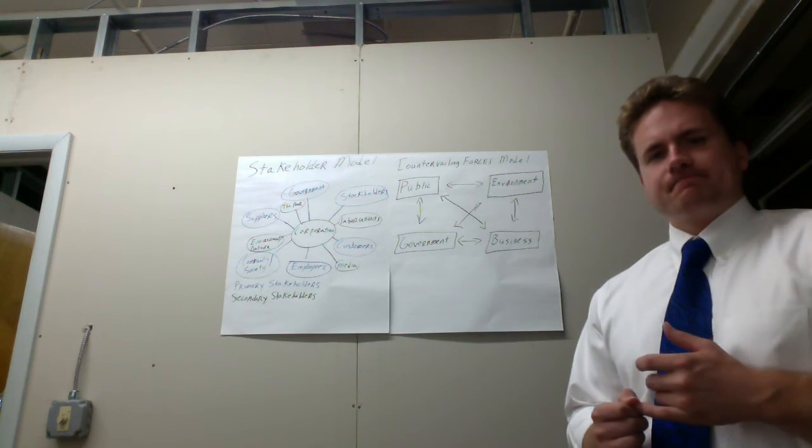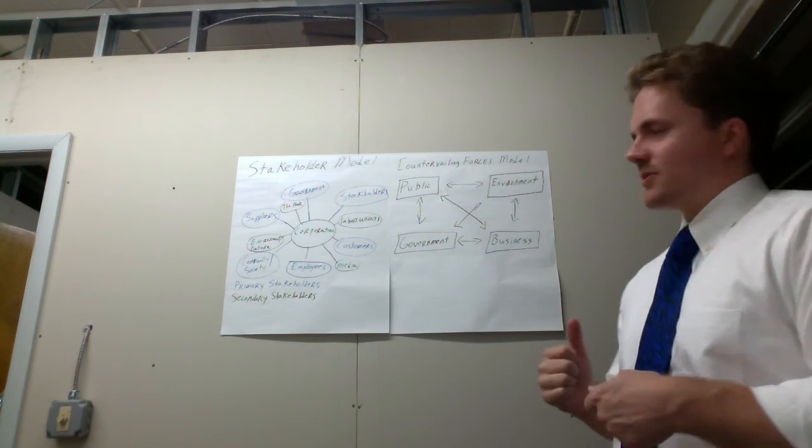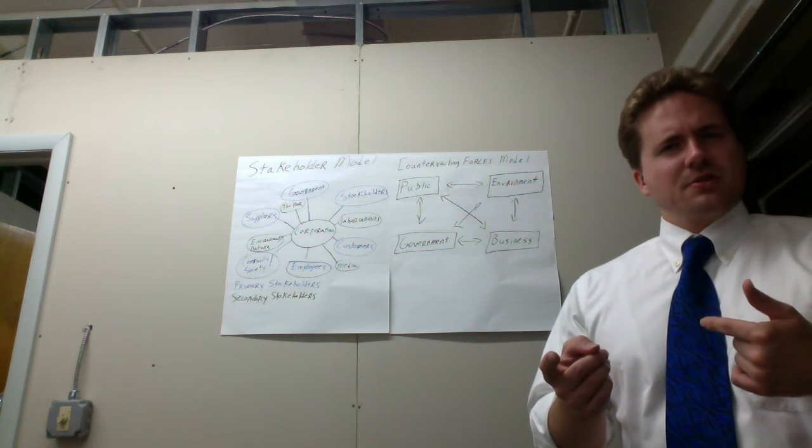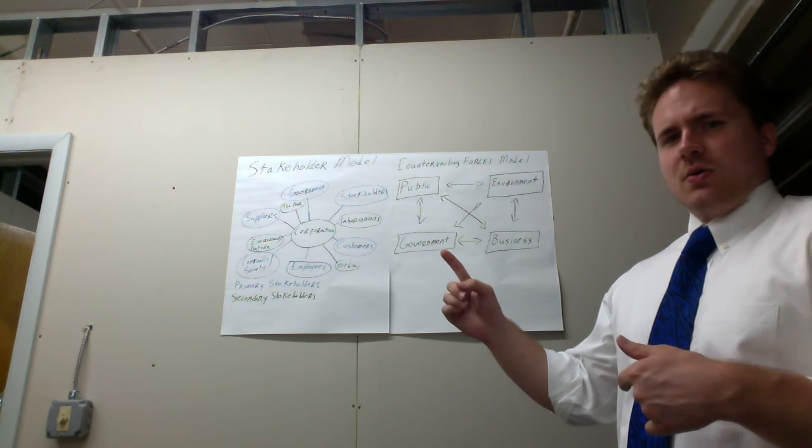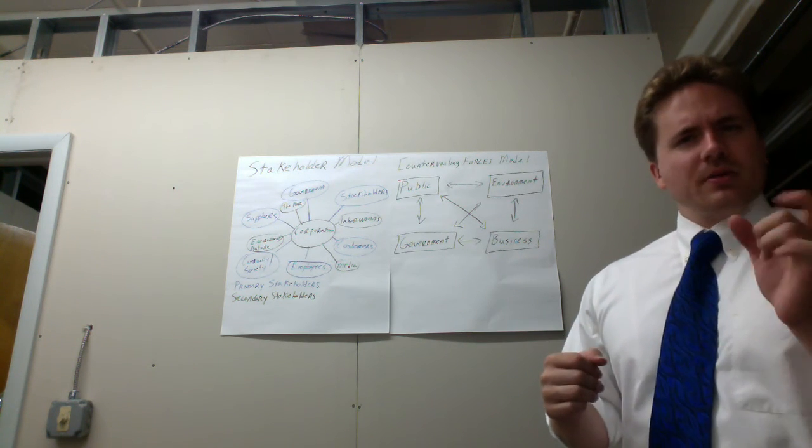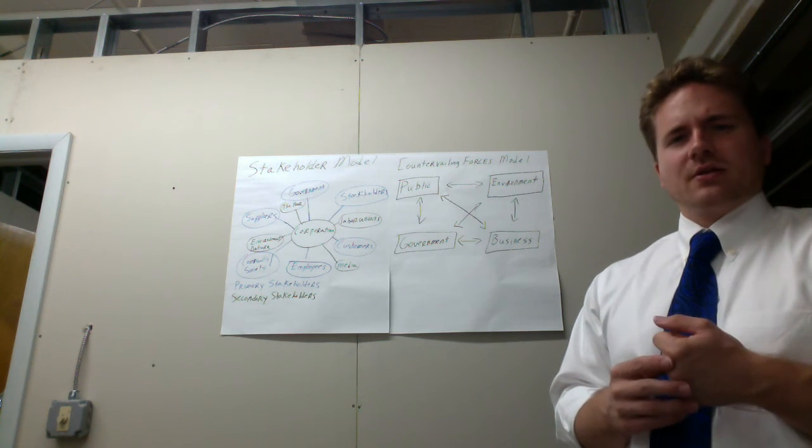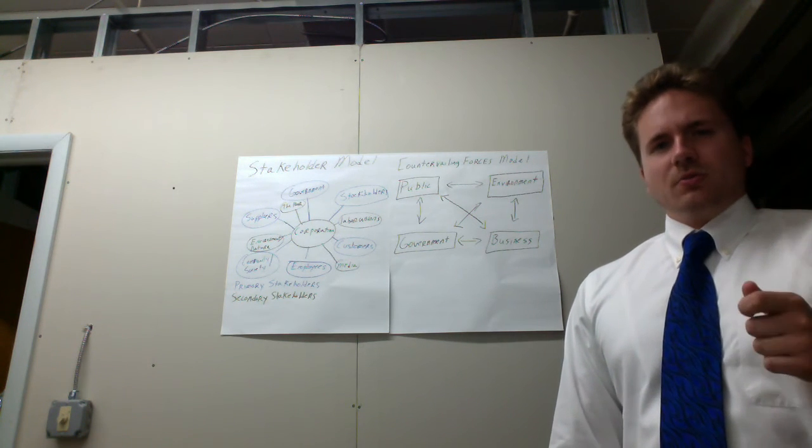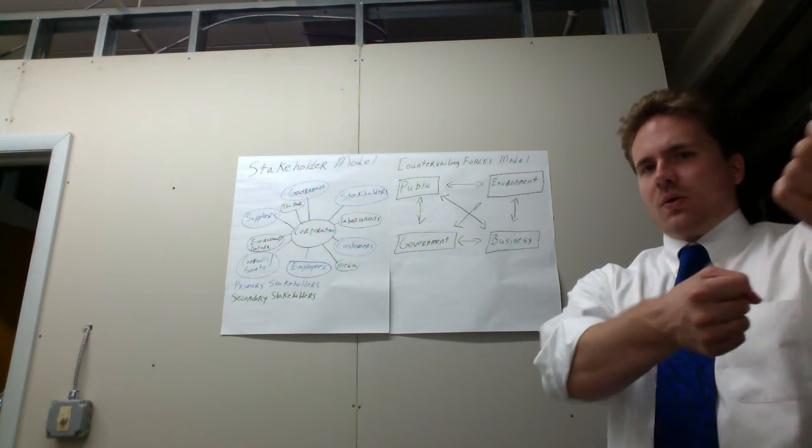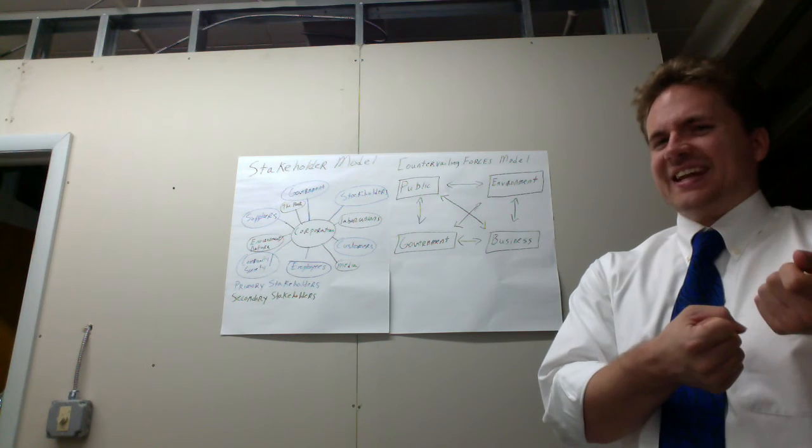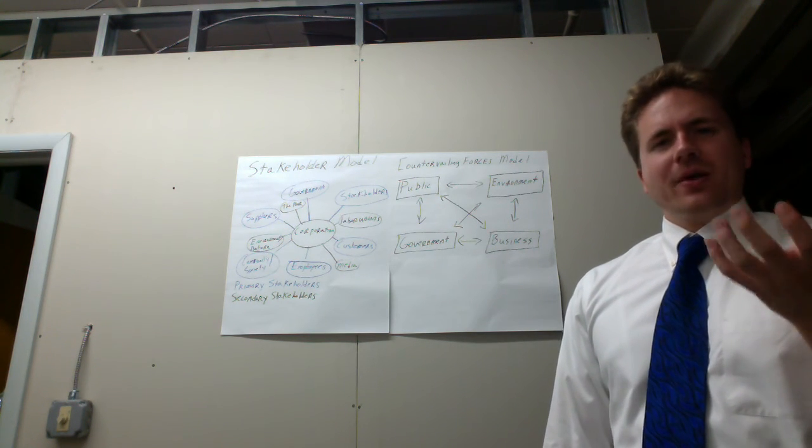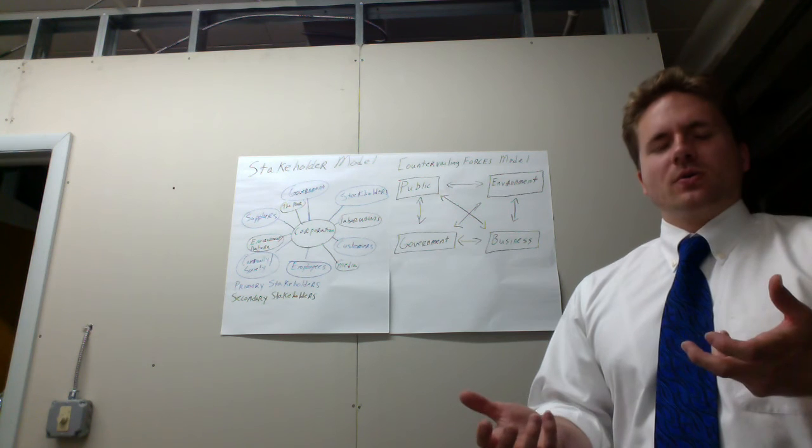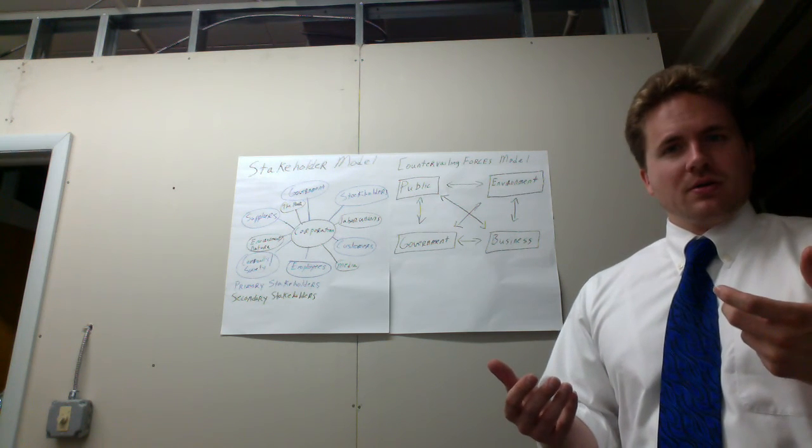Now another important question. The countervailing forces model and the stakeholder model, they look kind of the same, don't they? So what's the difference? And as we progress in this course, you'll actually find that the majority of the theories that work for the countervailing forces model will also work for the stakeholder model. But there's a subtle difference in the ontology or the understanding of reality. And namely, the difference is that under the countervailing forces model, it is assumed that all forces or actors are equal. And it's kind of a tug of war. Nobody is dominant at any given time. Whereas in the stakeholder model, the corporation is at the center. And as an executive, what you need to do is kind of balance or manipulate your stakeholders to behave in such a way that is in your interest.